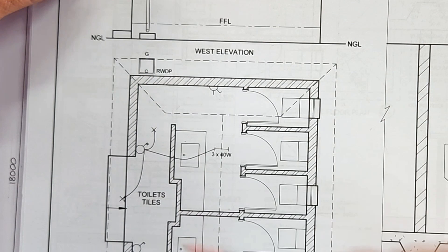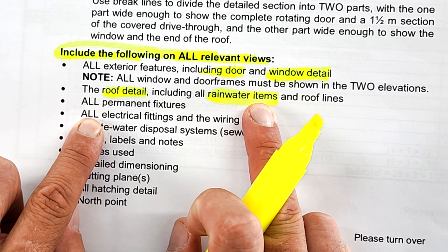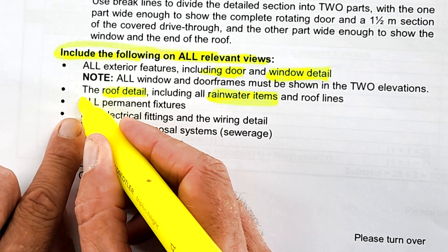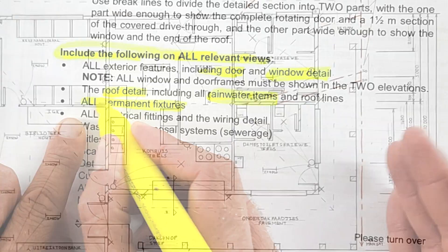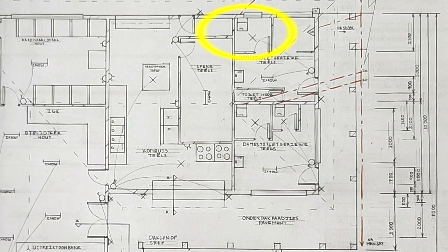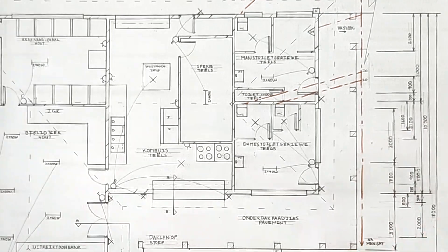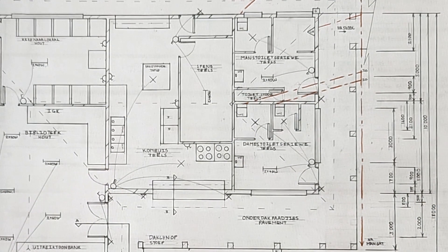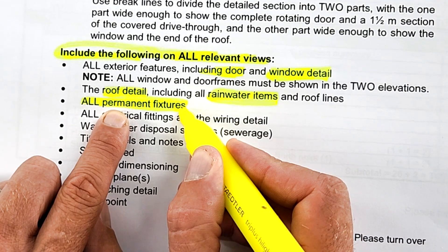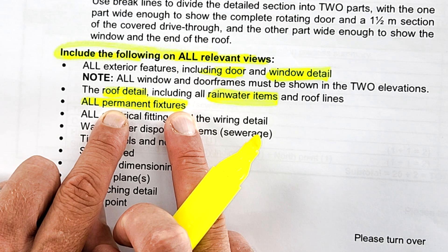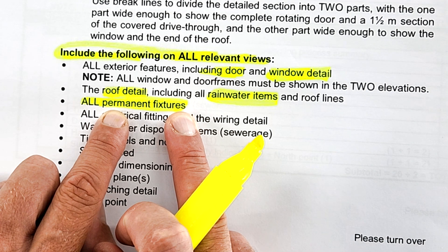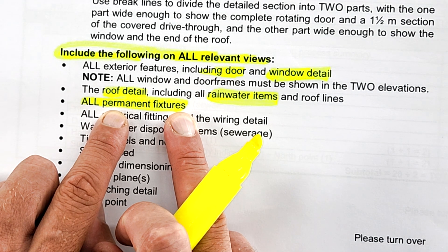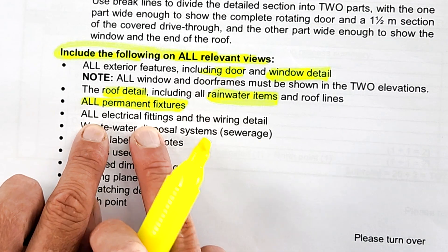All permanent fixtures—all the things that are permanently fixed within this building: the sanitary, the reception desk, your kitchen cupboards, built-in cupboards. It excludes people, chairs, tables—those kinds of things that won't be shown in these drawings.